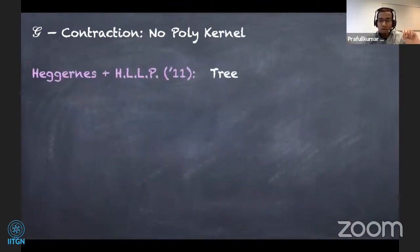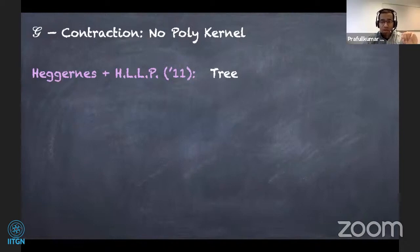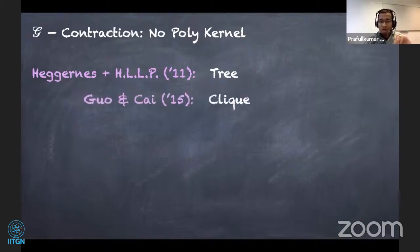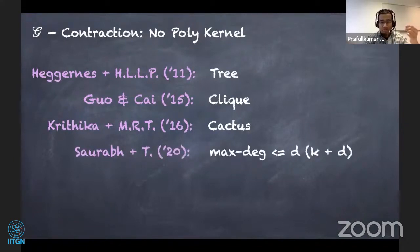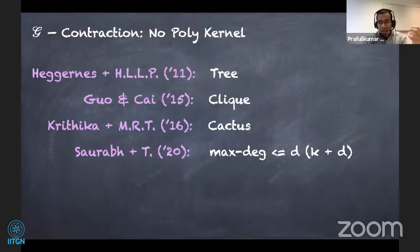What about no-polynomial-kernel results? Heggernes et al. proved that tree contraction does not admit a polynomial kernel unless NP ⊆ coNP/poly. Similar results were known for clique contraction since 2015. In 2016, we were able to lift this reduction and prove the similar result for cactus contraction. This year we showed that if the target graph class is graphs with bounded max-degree, parameterized by k + d, the problem does not admit a polynomial kernel.